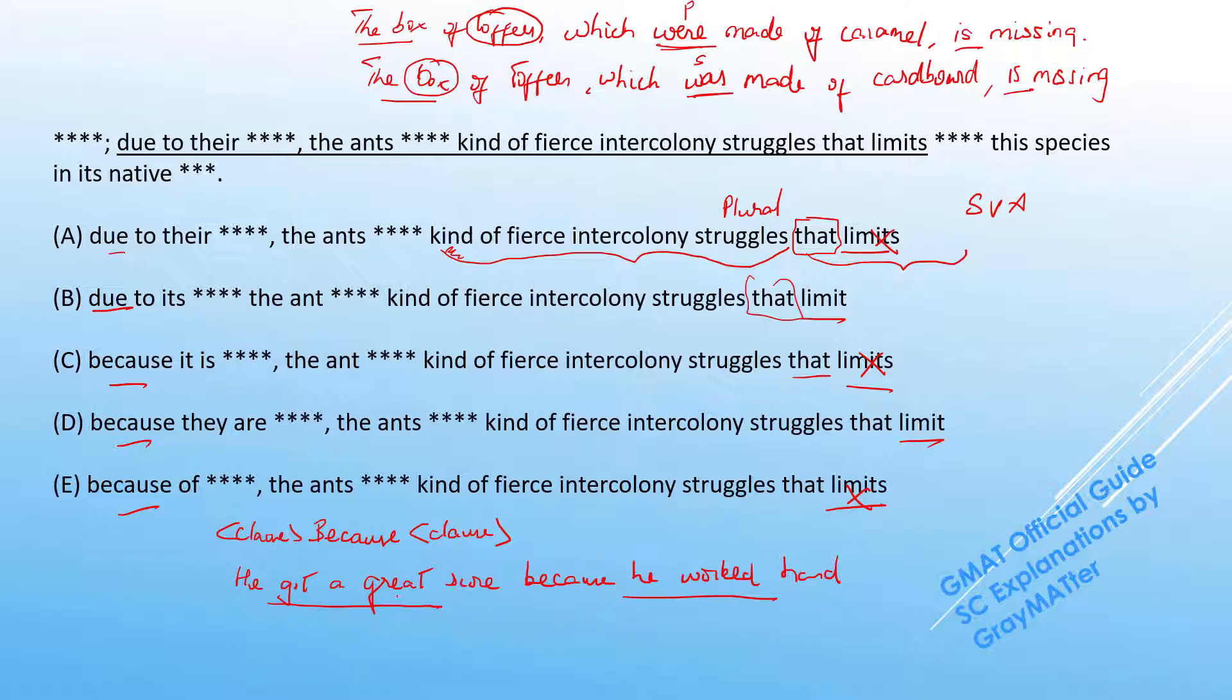So we can say he got a great score because of his hard work. So we can see that his hard work is a noun phrase here. So this connection is perfectly grammatical. And due to is something that connects a noun to another noun.